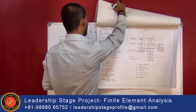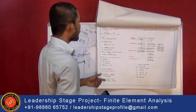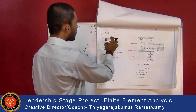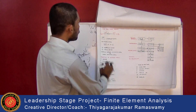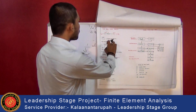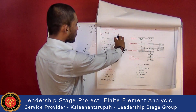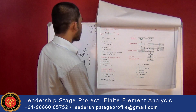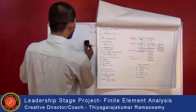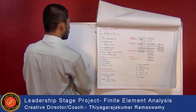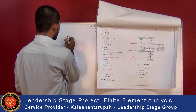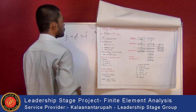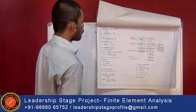Next is the free body diagram approach to calculate the stiffness matrix of springs. This is the free body diagram of the spring, where Ui and Uj are the displacement vectors, F is the force, and K is the stiffness of the material. To find the stiffness matrix, the equation is K into D equals F, where K is stiffness, D is displacement, and F is the force vector.